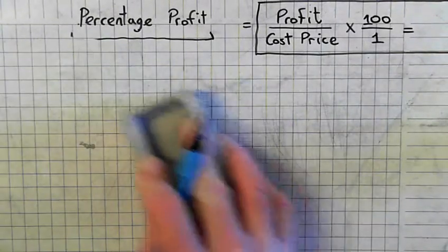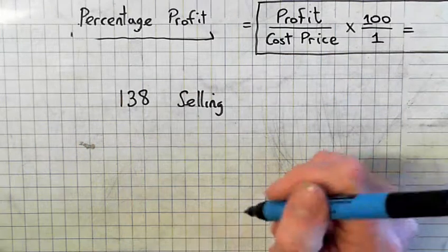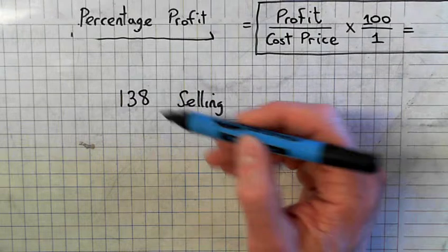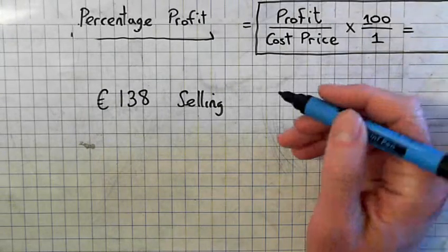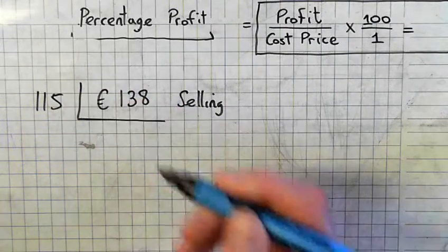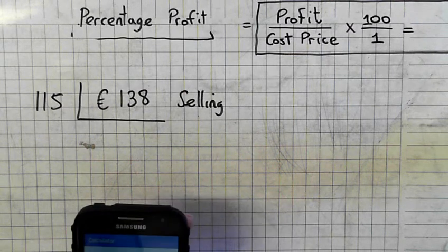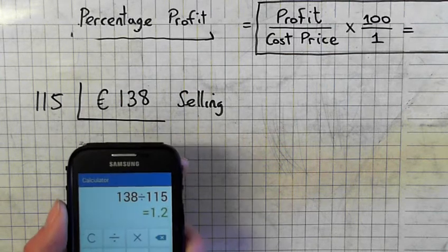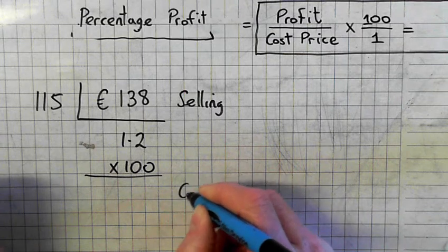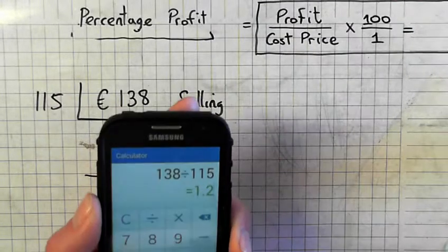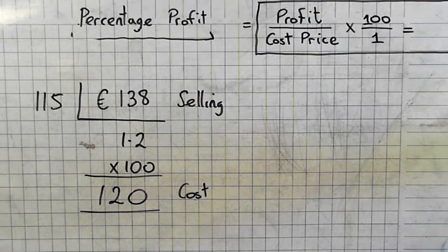The selling is slightly different. So we sell it for €138. We made a profit of 15%, so €138 is how many percent altogether? It's 115%. So divide by 115 to get 1%. 138 divided by 115 equals 1.2. And how do you find the original buying price, the cost price? Multiply by 100 to find the cost price. Times 100. 120. 120 was the cost price.